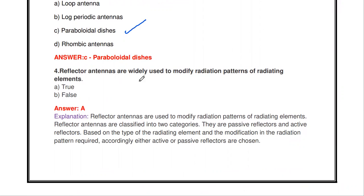The next question: reflector antennas are widely used to modify the radiation pattern of a radiating element - true or false? It is true. The reflector antenna is used to modify the radiation pattern of the radiating element. There are different types of reflector antennas, classified into two types: passive reflector and active reflector.